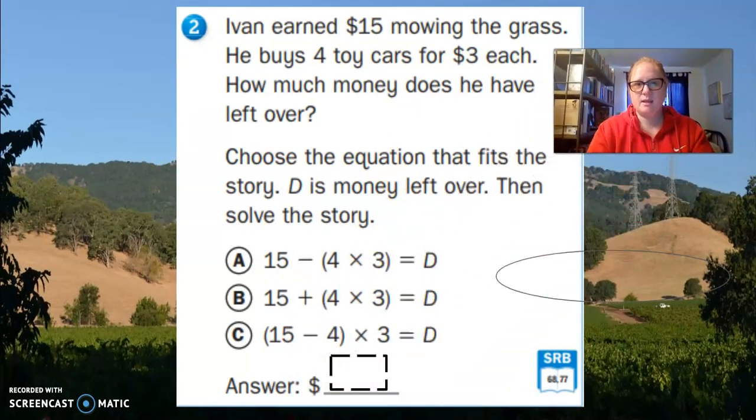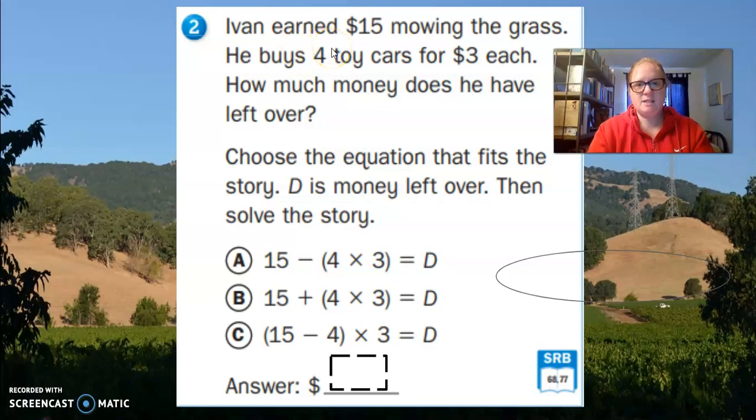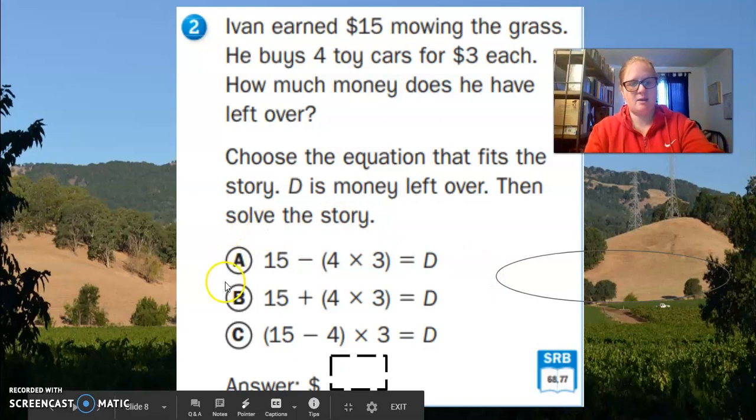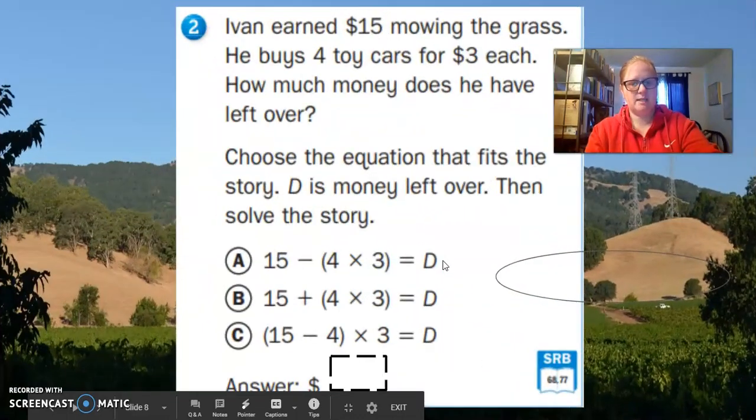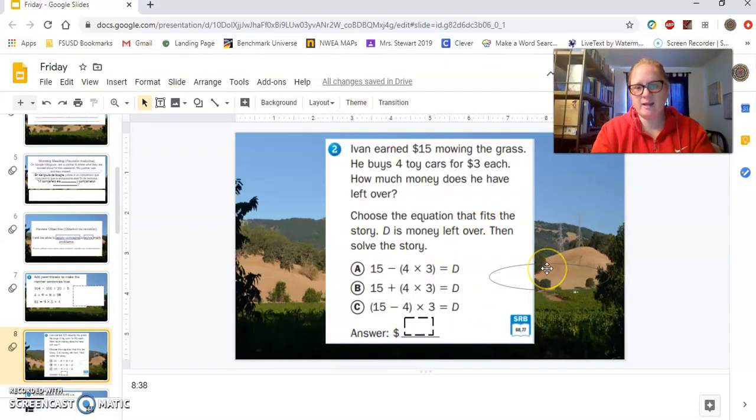Next math box. Ivan earned $15 mowing the grass. He buys four toy cars for $3 each. How much money does he have left over? Choose the equation that fits the story. D is money left over. Then solve the story. So we have $15 mowing grass. He buys four toy cars for $3 each. So I think I have a clue here as to what needs to go first. And so when you are solving this and trying to pick which one of these works best, I did provide you guys with a circle.